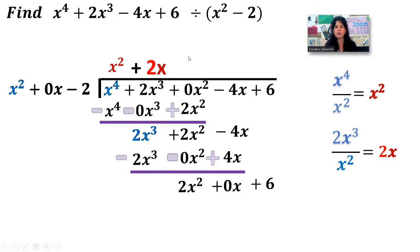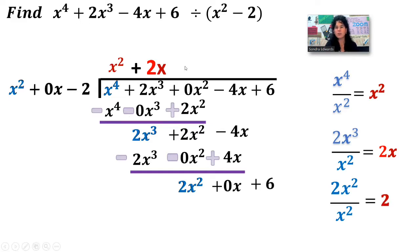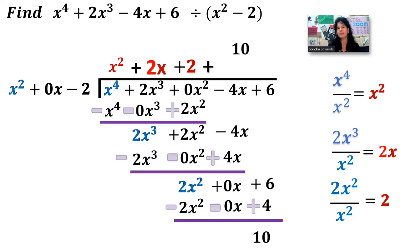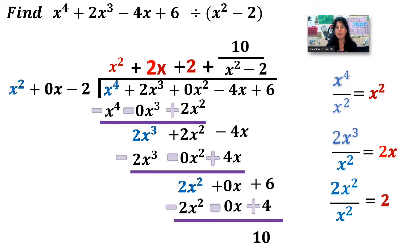Ready to bring down the 6 and start again. To decide what goes up here, what's in front over what's in front: 2x squared over x squared is just 2. That goes up here. Multiply 2 times each of the terms: 2 times x squared is 2x squared, 2 times 0x is 0x, 2 times negative 2 is minus 4. Draw my line, ready to subtract — run that negative all the way through. Combine: 6 and 4 make 10. That's our remainder, so we're adding on the extra: plus 10 over our divisor. And we have our final answer.